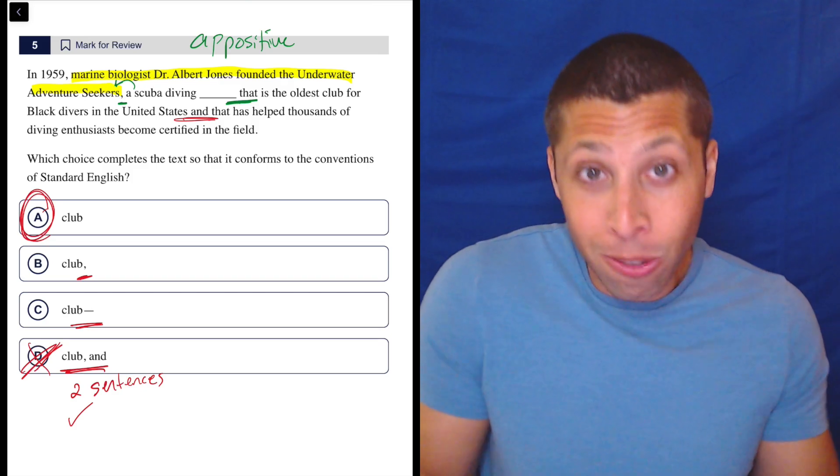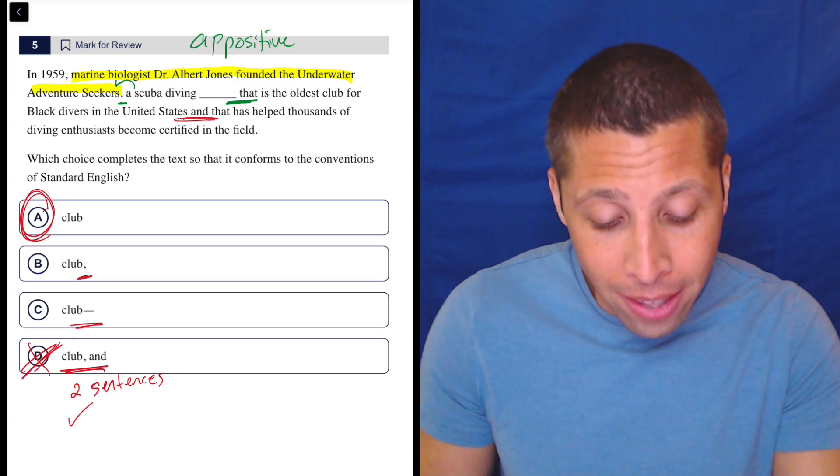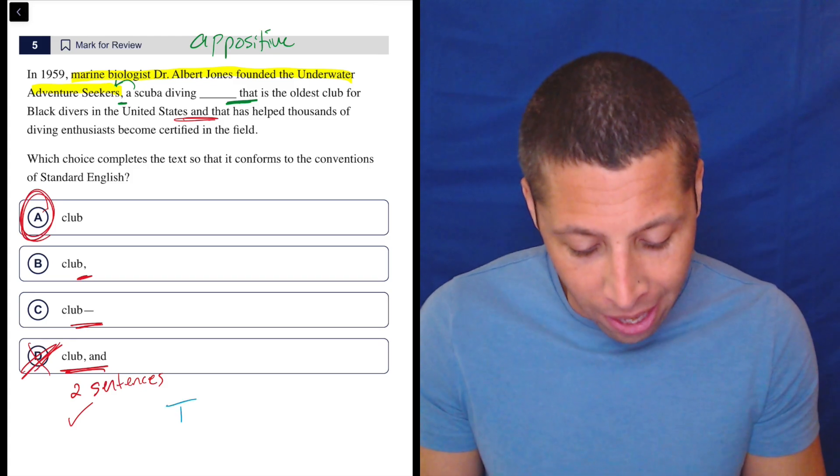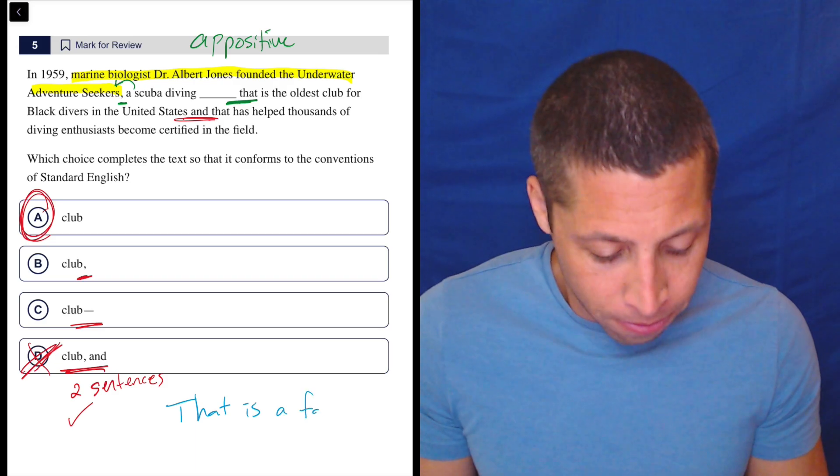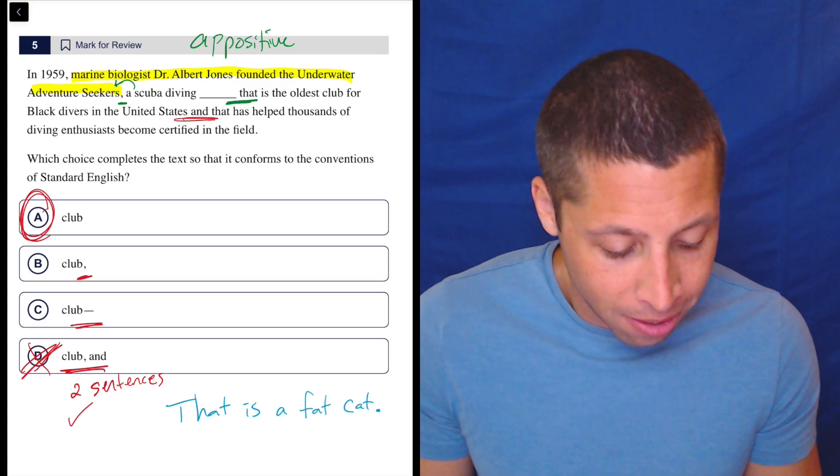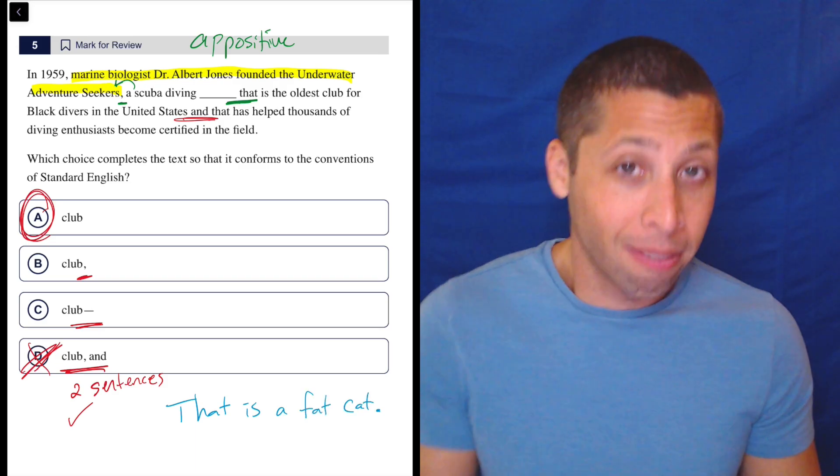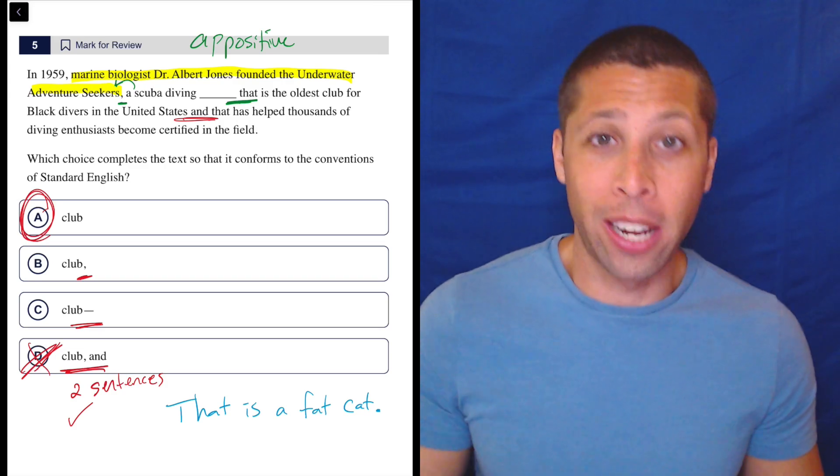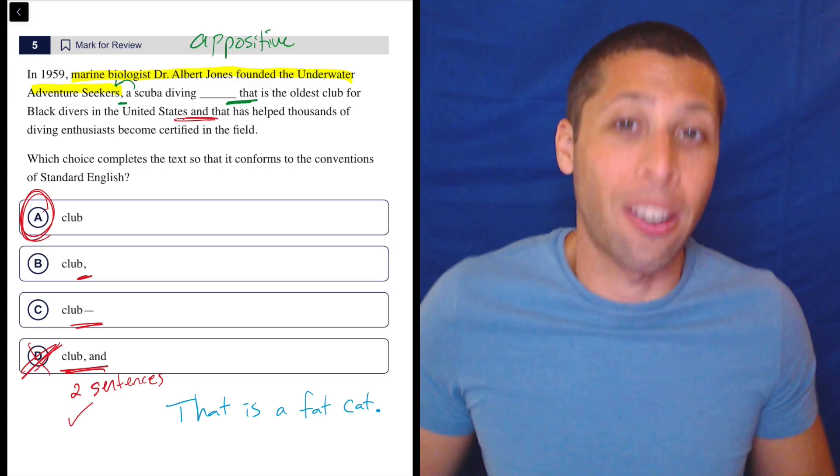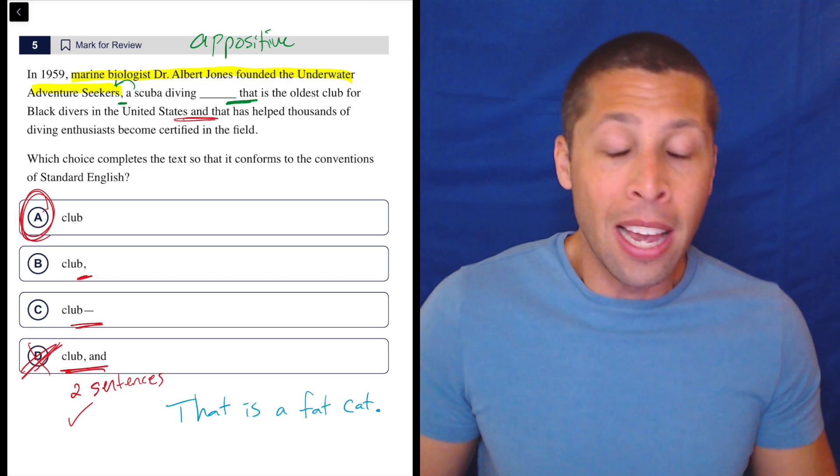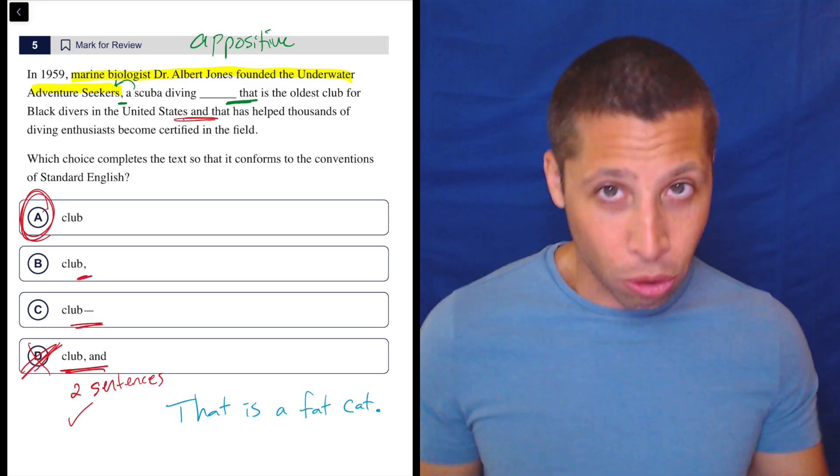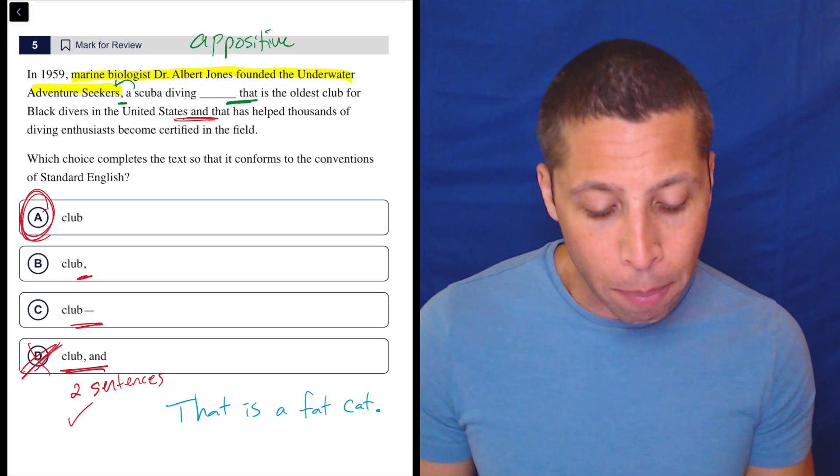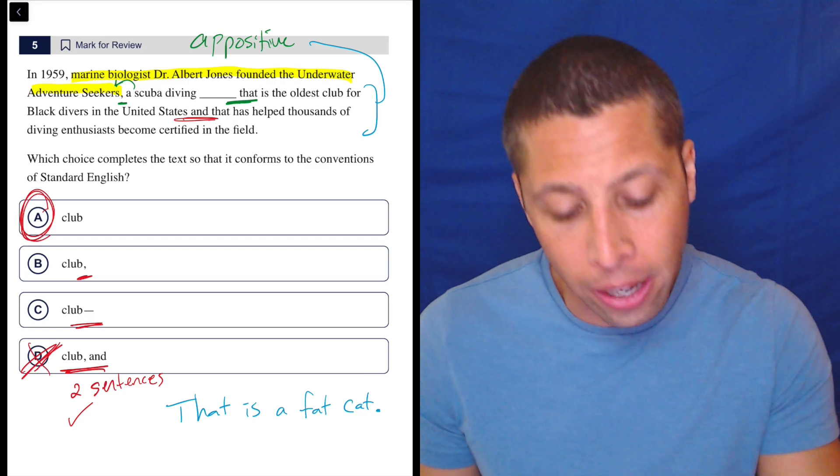Now, we could start sentences with 'that.' And that's why this is a little trickier than usual. We could say 'That is a fat cat,' right? That's a sentence, right? That's a fat cat right there, over there, right? So you could say stuff like that. It would be a sentence. But that's not what's happening here. The word 'that' here is just used to describe this club. We have a very long appositive that's basically the entire end of the sentence.